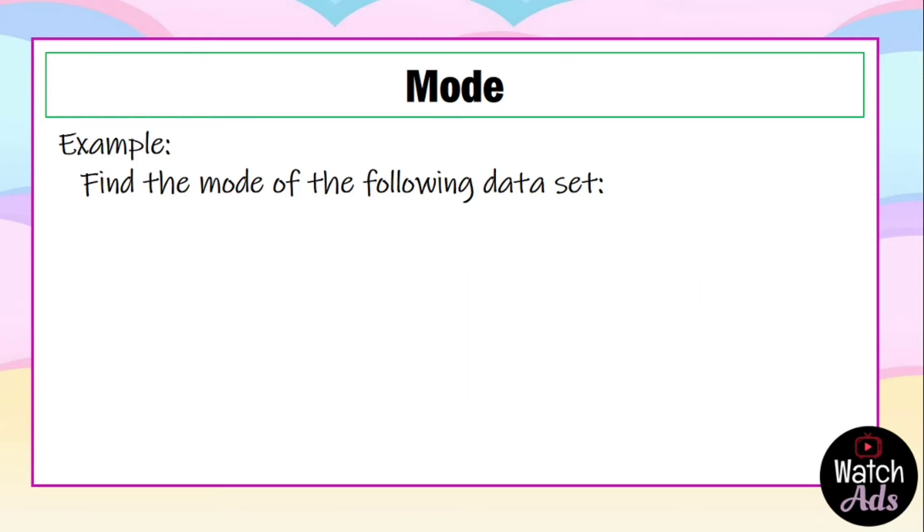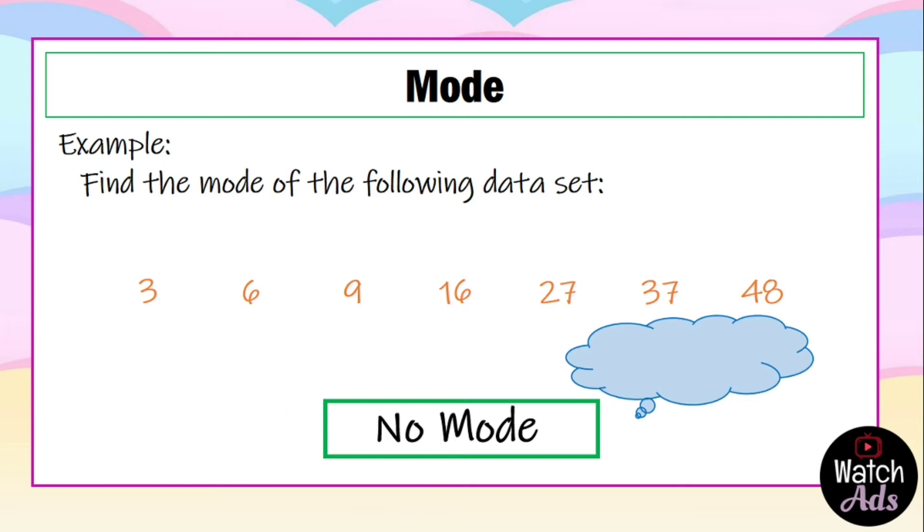Let's have our last example: 3, 6, 9, 16, 27, 37, and 48. All of the data appeared once, which means we don't have a mode. So the answer is no mode because all numbers occur once.